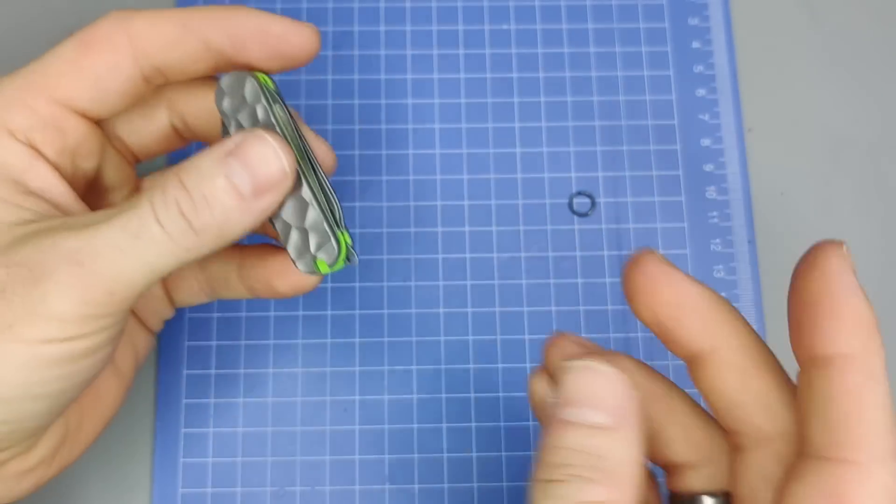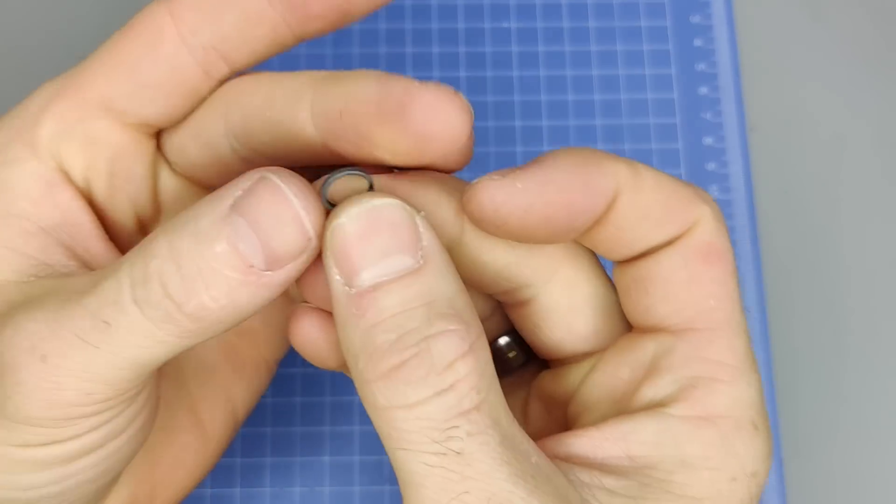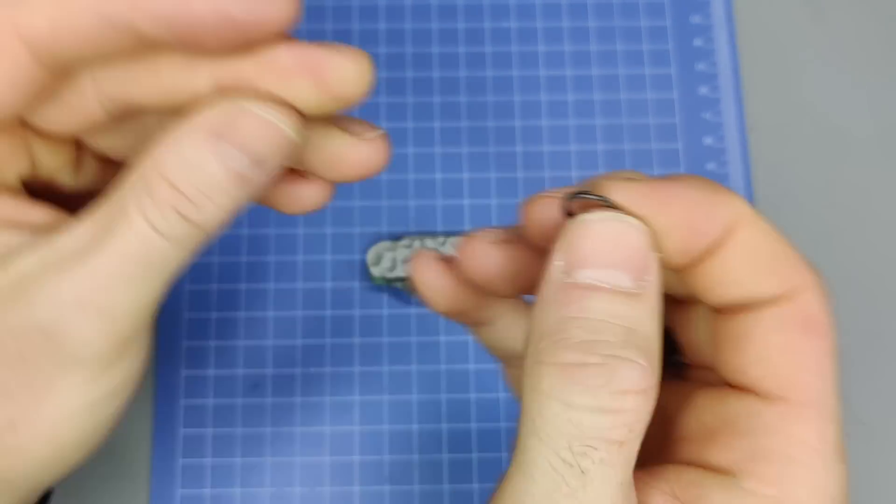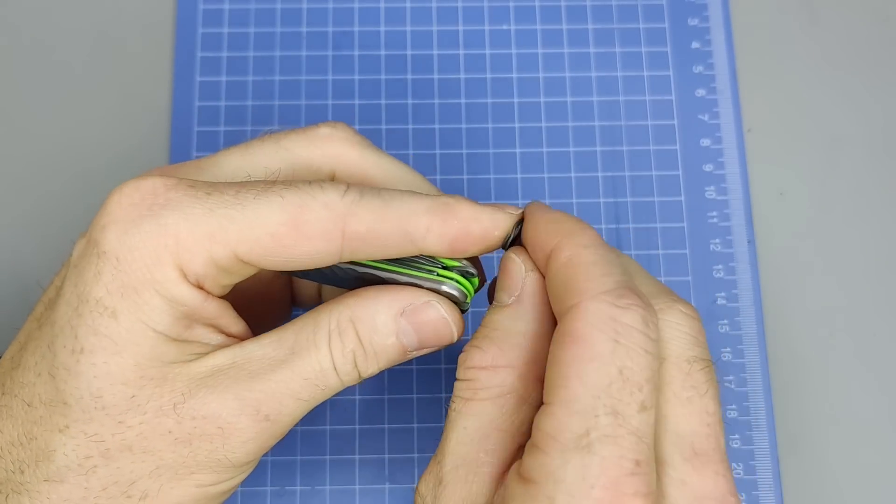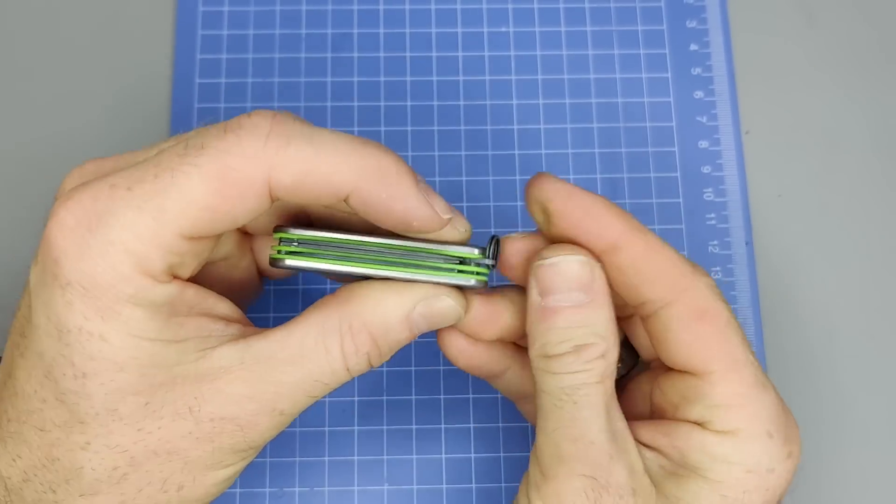Alright, next thing we're going to do now, the key ring I also have acid etched. And so what we're going to do now is just need to attach this. Alright, so now we have our key ring.